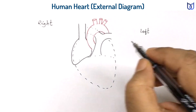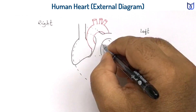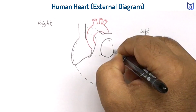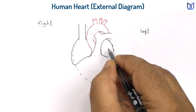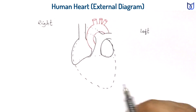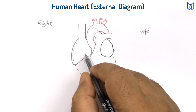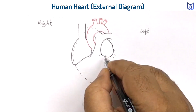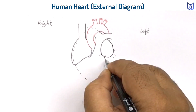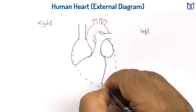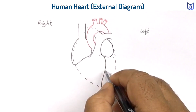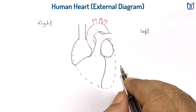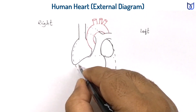Now draw the two auricles — the right auricle is larger and the left auricle is smaller. In the ventricular part, an oblique longitudinal groove divides it into two different regions; this is called the interventricular groove. The outer boundary of the ventricular part can be drawn here.